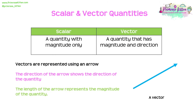In physics we learn about scalar and vector quantities. A scalar is a quantity which has magnitude only, so it only has a size associated with it, whereas a vector has both magnitude and also direction. In physics we might often see vectors represented using an arrow, and the size or length of that arrow gives us an idea of the size of the quantity, and the direction it's pointing tells us the direction of it.